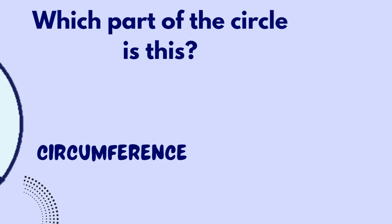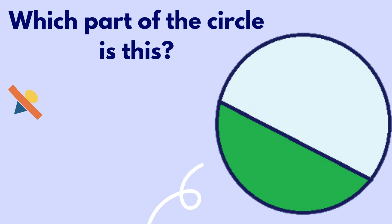Which part of the circle is this? It's an area that is less than the semicircle and it consists of an arc and a chord. Great job. It's segment.